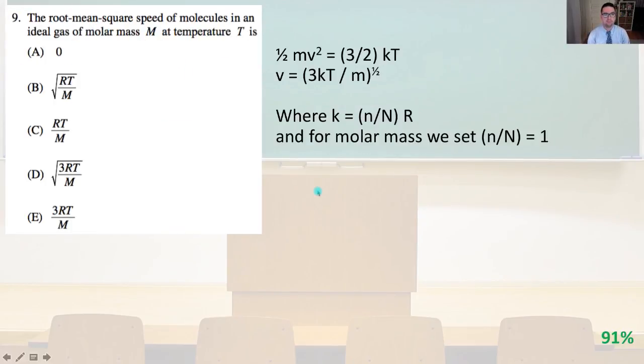Number 9. The root mean square speed of molecules in an ideal gas of molar mass M at temperature T is. So we have 1 half mv squared equals 3 halves kT where k is Boltzmann's constant. T is the temperature. M is mass and V is the velocity. So we have V equals the square root of 3 kT over M. And here we just set k equal to N over capital N, that quantity times R. And for molar mass, we set N over N equal to 1. So that is going to be answer D.